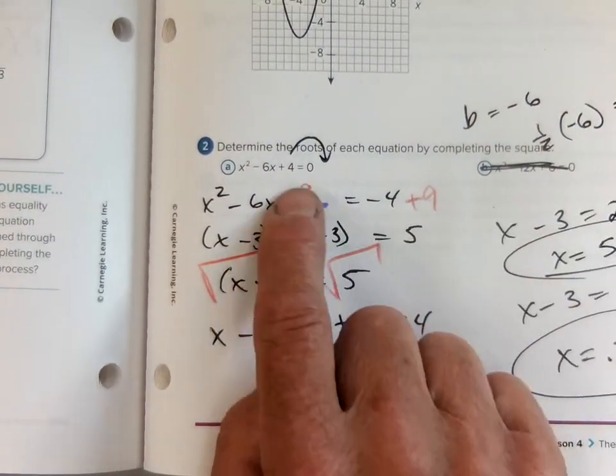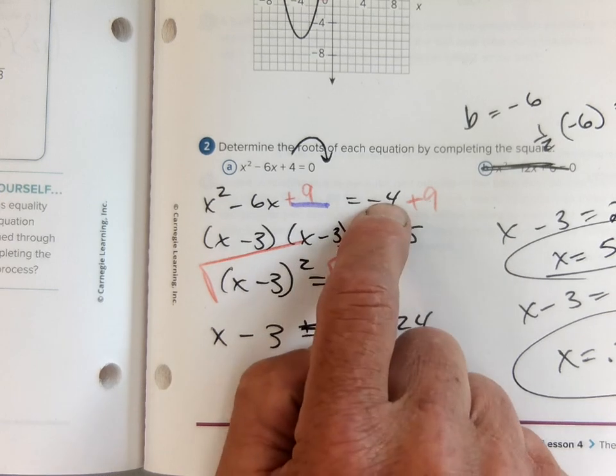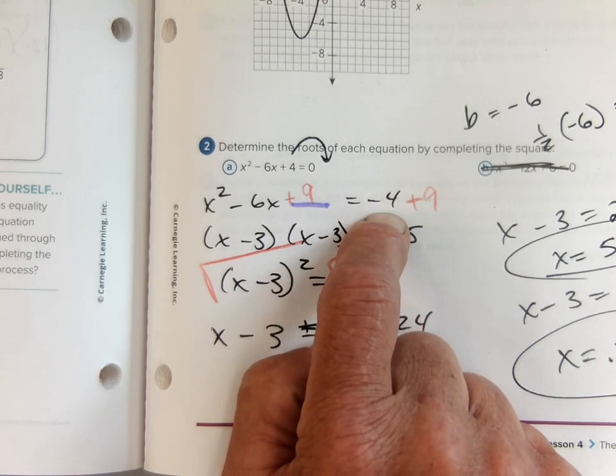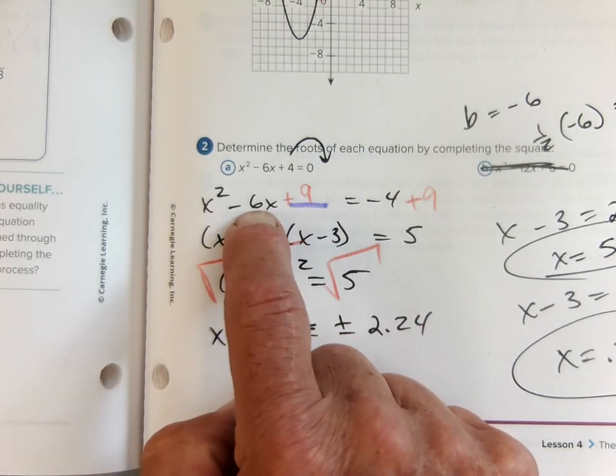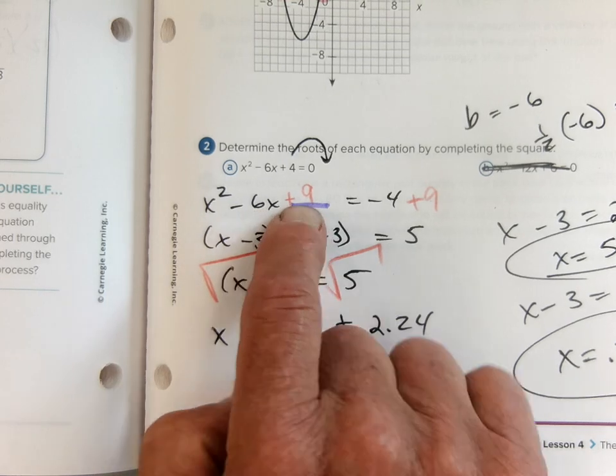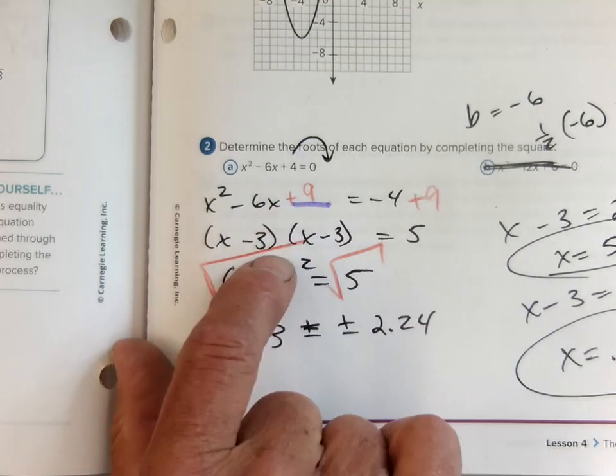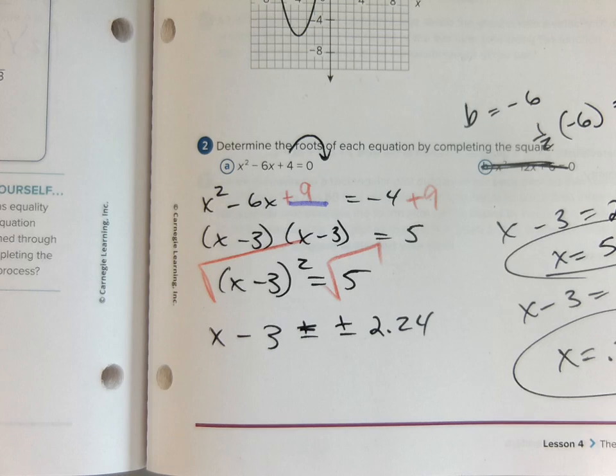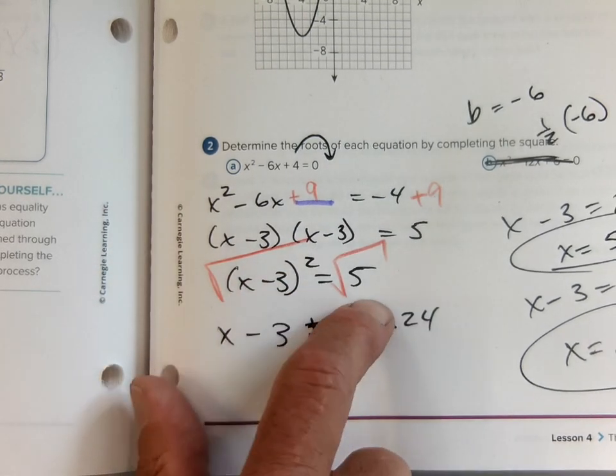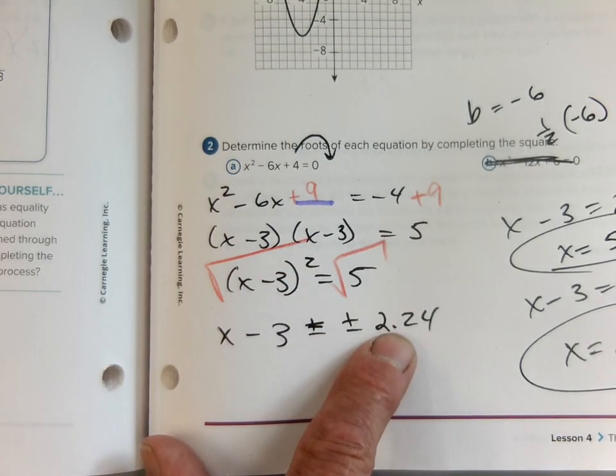We did one more with the negative. We move 4 to the other side. This first step I did. I took half of 6 is 3. 3 squared is 9. So I added 9 to both sides. That factors as x minus 3, x minus 3, x minus 3 squared. The square root of both sides. 2.24 plus or minus.